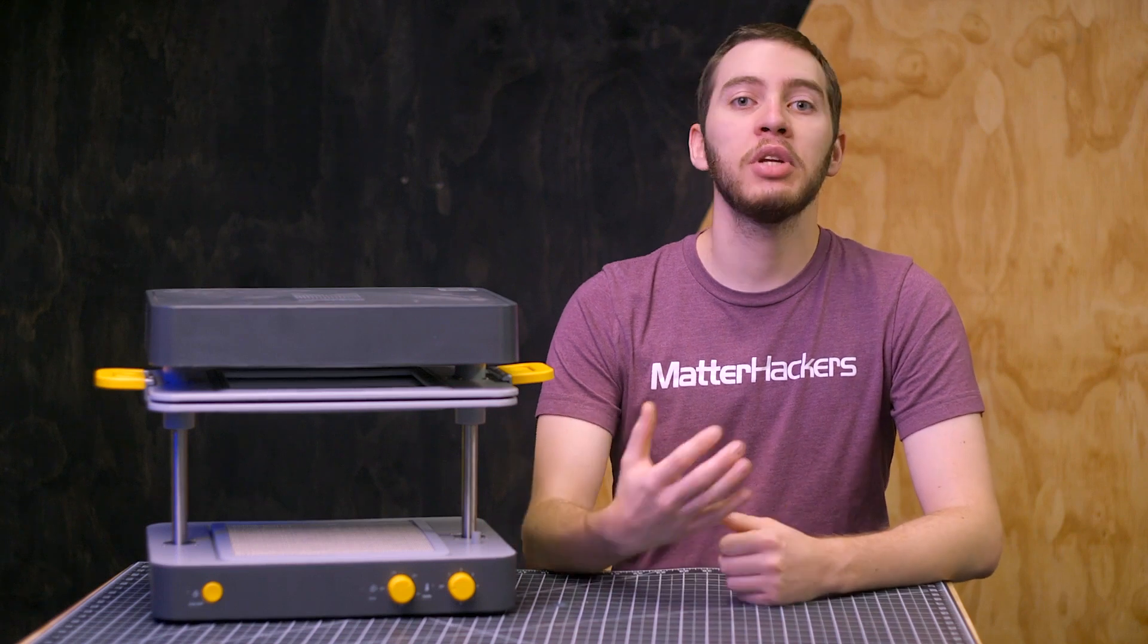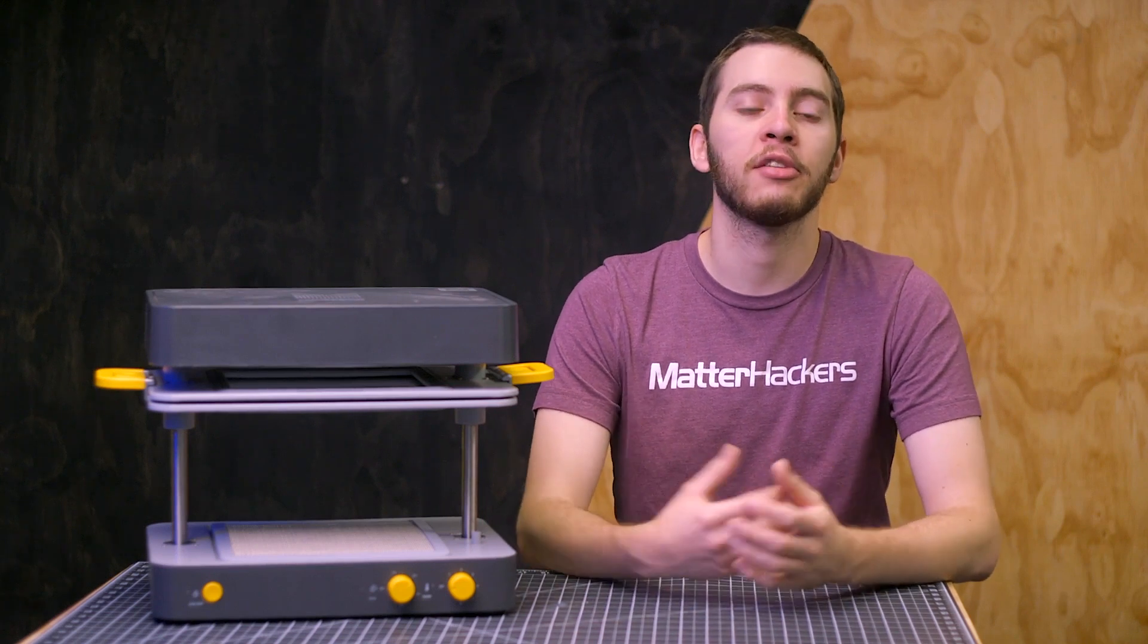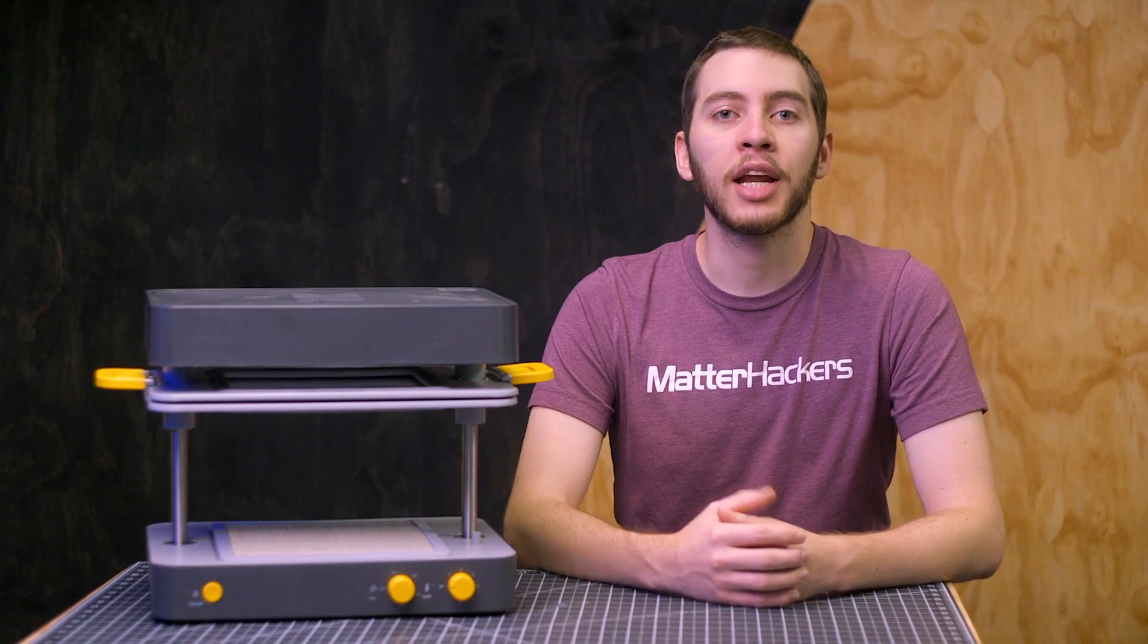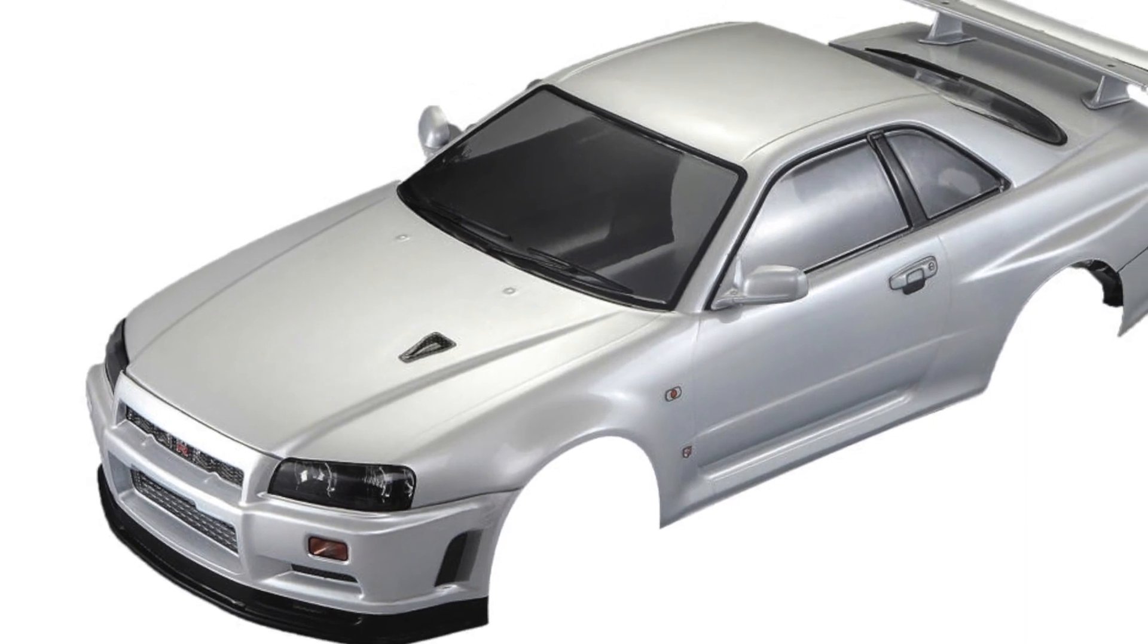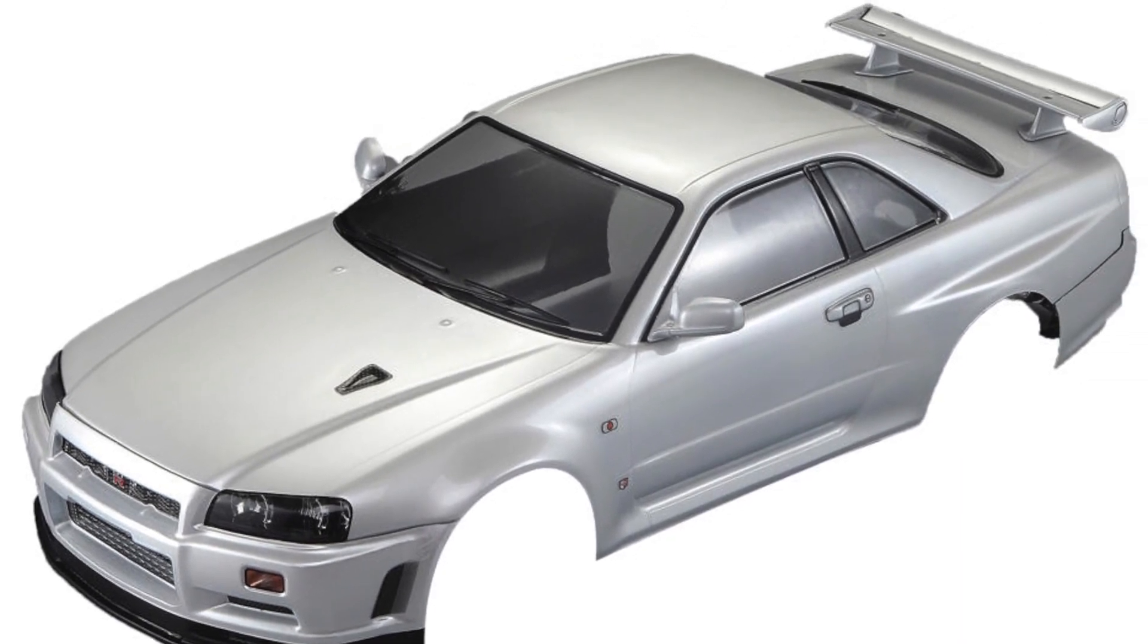Before you get started, you need to determine if vacuum forming is the method of manufacturing for you. There are more ways to utilize it than I could list out here, but some real world examples of vacuum forming include RC car bodies. They're cheap, they're light, and they're thin enough to be flexible and avoid shattering in a crash.